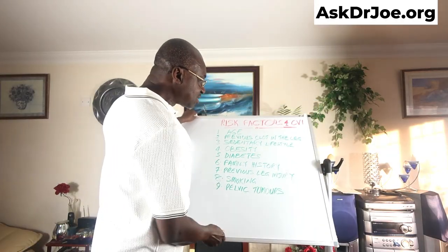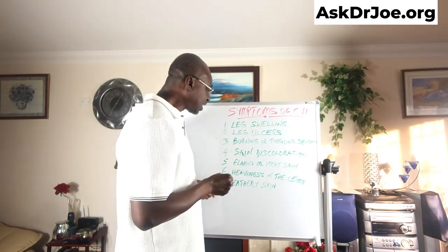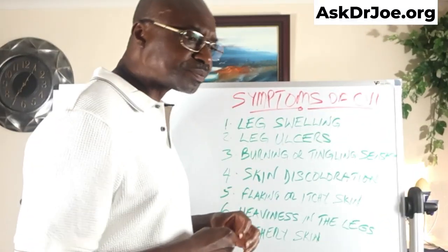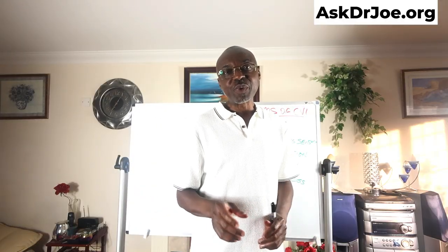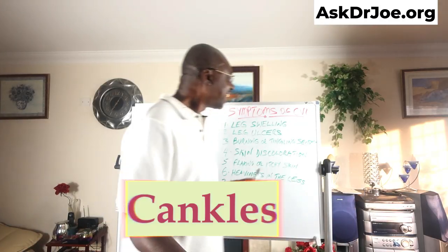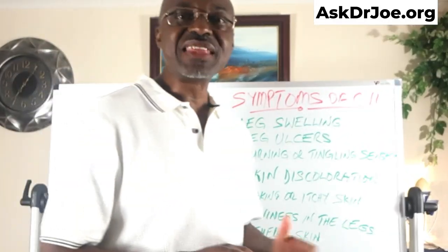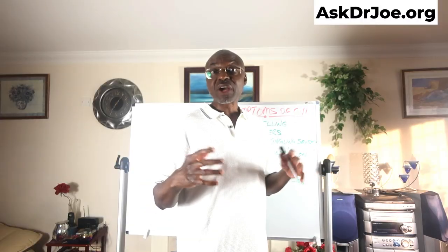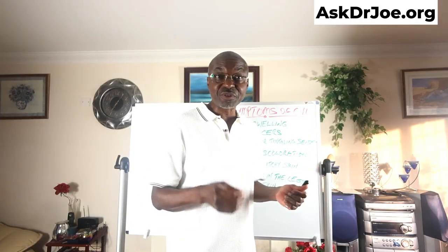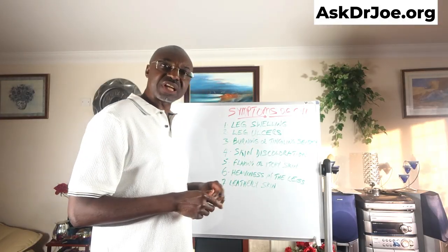Now let's talk about the symptoms of chronic venous insufficiency — I've got seven to discuss. The first one is leg swelling. If you have pooling of blood because the veins are incompetent and cannot drain properly, the leg is going to be swollen. Fluid will seep out into surrounding tissues, and when you wear shoes you'll end up with a muffin top around your shoe edge — which is probably what people call cankles. Number two is leg ulcers, which has to do with the supply of oxygen and nutrients to the skin.